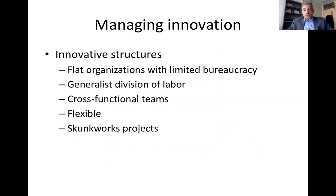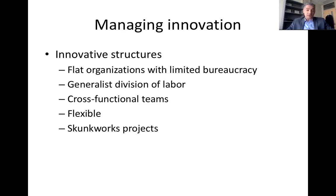If you decide to change the organization to manage for innovation, certain organizational structures are known to work best. First, you want a flat organization with limited bureaucracy. I mentioned that at some point General Electric had 27 layers of management — that is definitely not sustainable for an innovating company. For information to reach the top level from the bottom where a problem is noticed, imagine 27 steps going up and 27 steps going down once a decision is made. You definitely want an organization that is flat and agile, where information can reach decision makers very fast.